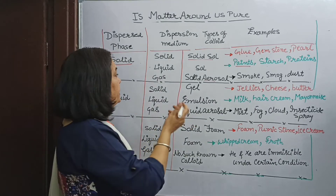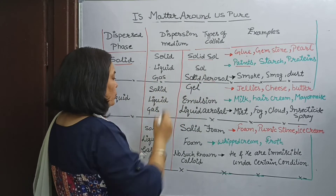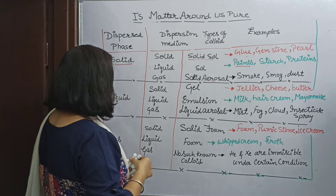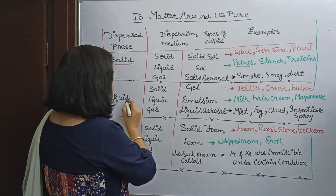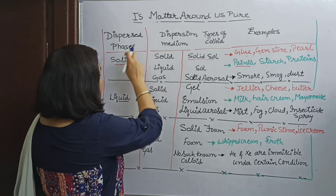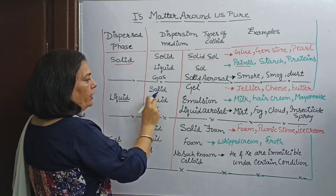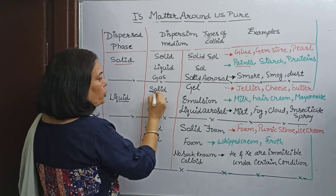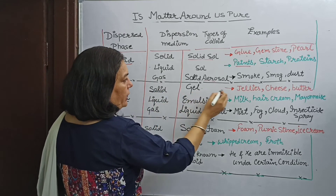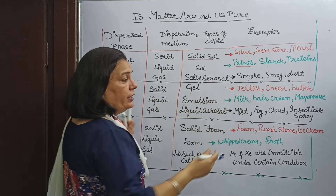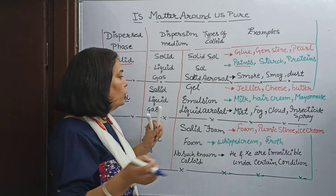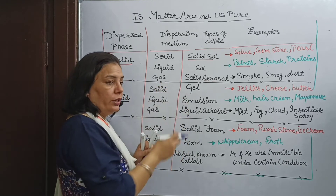All these are examples of solid aerosol. Next, when liquid works as the dispersed phase — when liquid dissolves in solid, it is called gel. Jelly, cheese, and butter are all examples of gel.